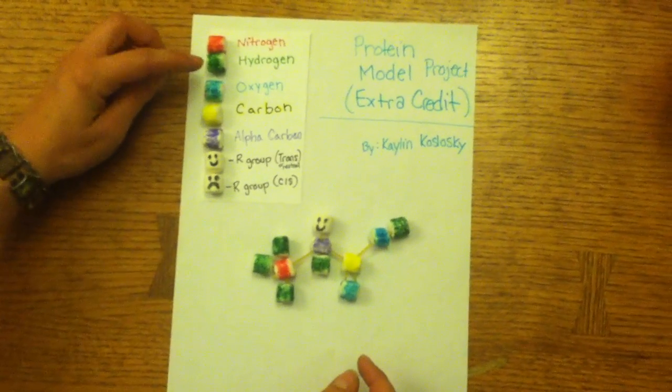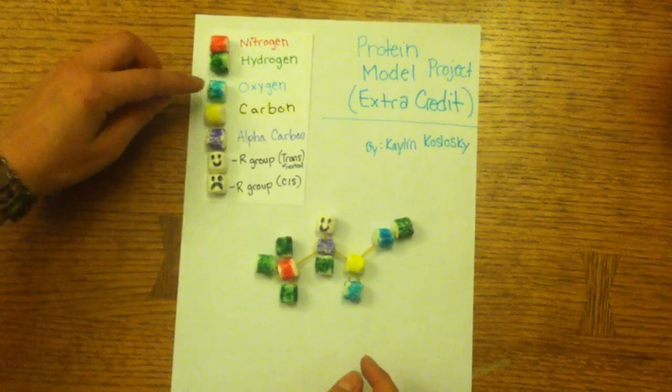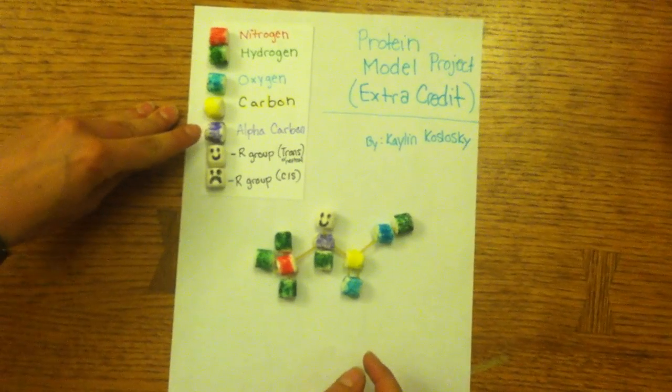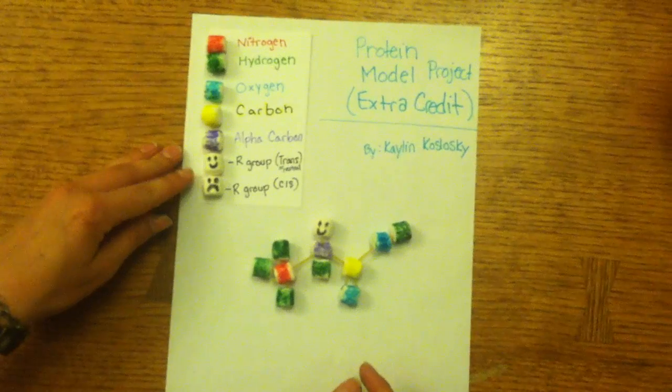The green is hydrogen, the red is nitrogen, blue is oxygen, yellow is carbon, purple will be the alpha carbon, and then white will be the R groups.